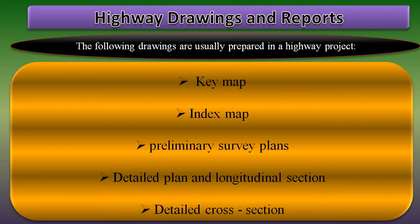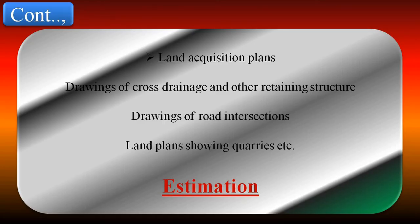There are around 9 to 10 points for highway drawings. These include: key map, index map, preliminary survey plans, detailed plan and longitudinal section, detailed cross section, land equalization plan, drawings of cross drainage and other retaining structures, drawings of road intersections, and land plans showing quarries.